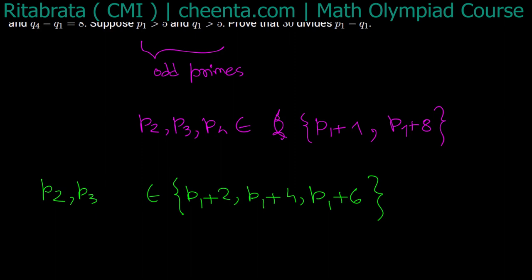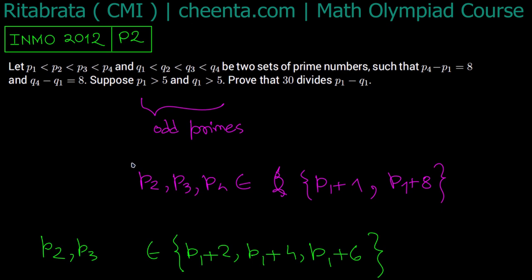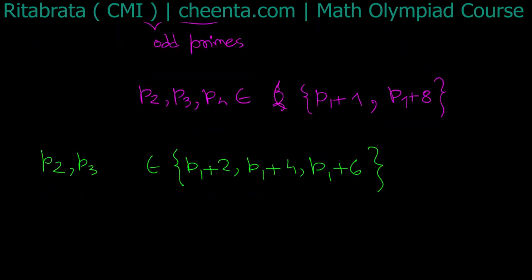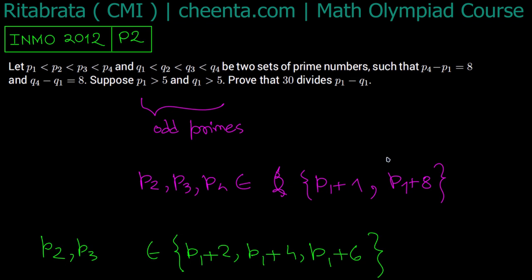So p2, p3 can be any one of these three numbers: p1 + 2, p1 + 4, and p1 + 6. Now let's see whether all of them are possible or not. See, I have to prove that p1 - q1 is congruent to 0 modulo 30. So first I will find p1 modulo 30, and as these are two sequences of prime numbers and they behave the same, it's enough to work with the sequence p1, p2, p3, and p4 only because analogically that sequence q1, q2, q3, q4 will also behave the same.